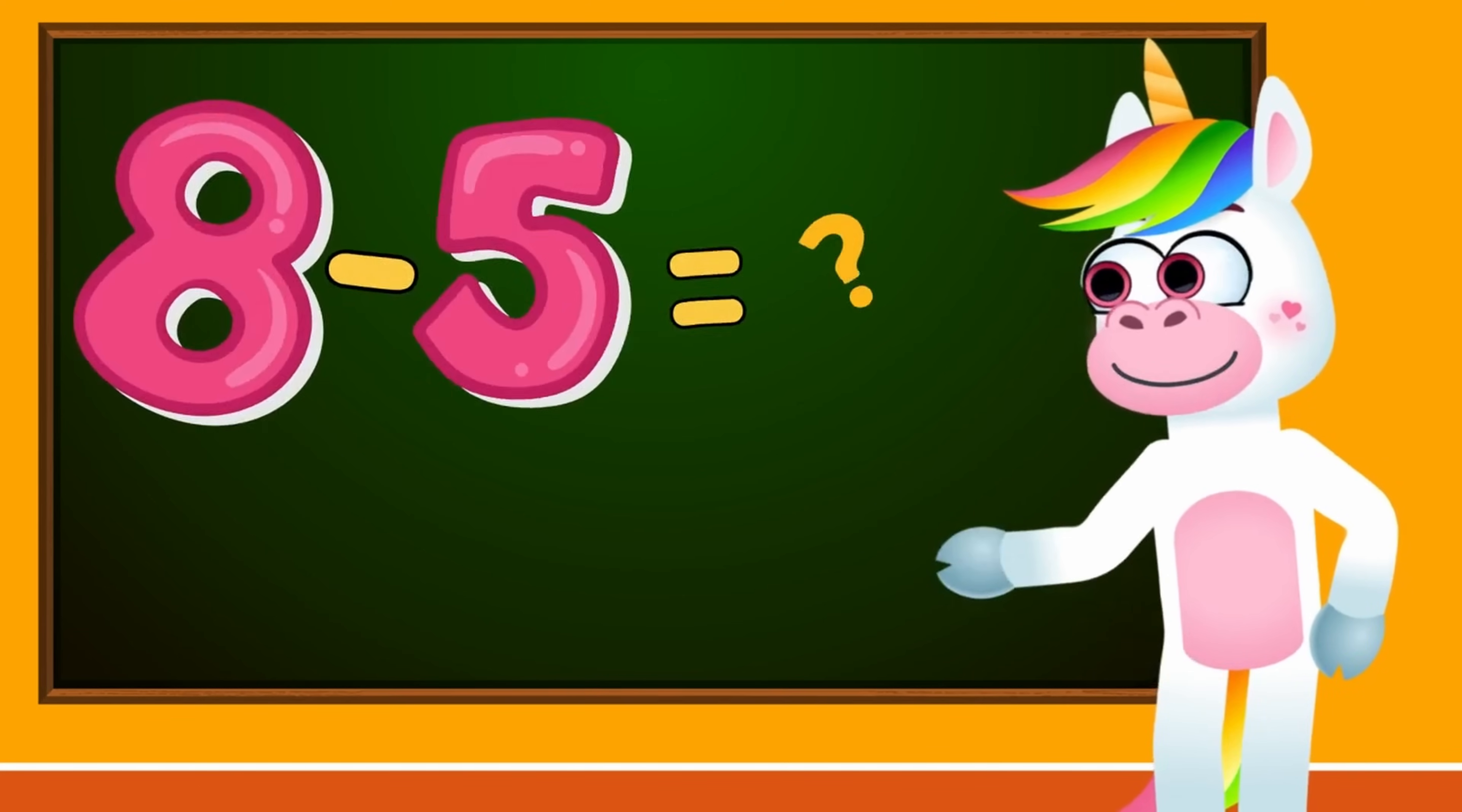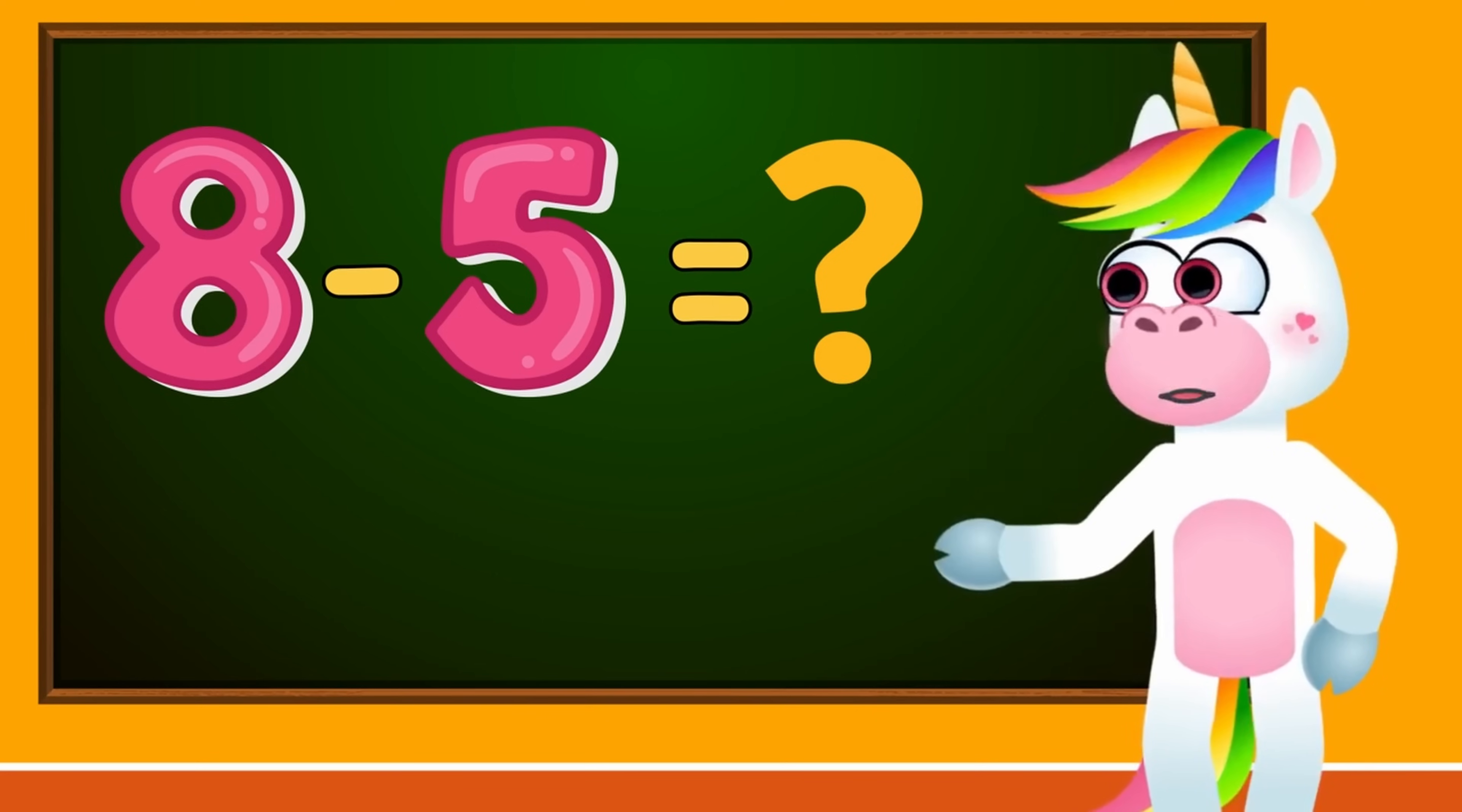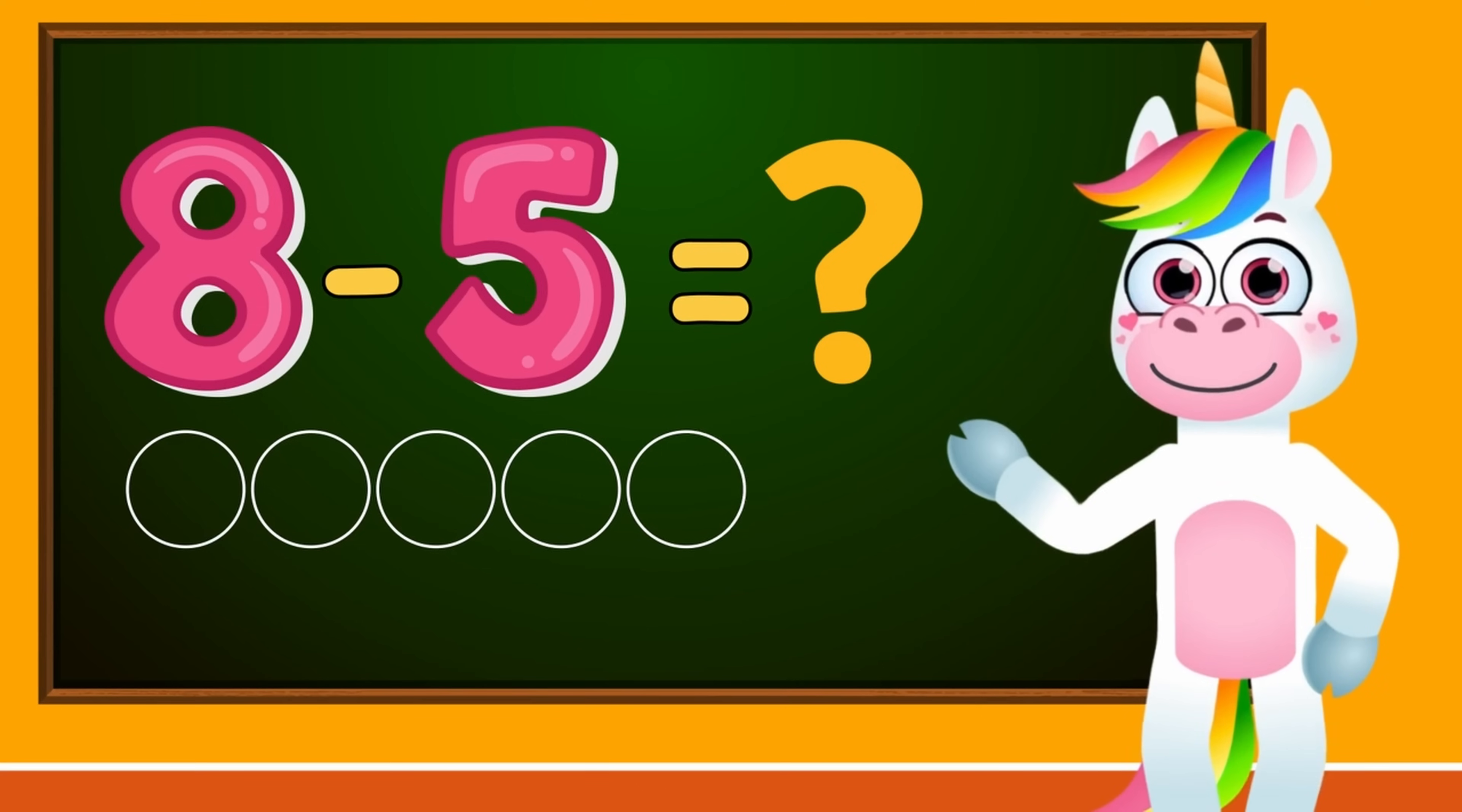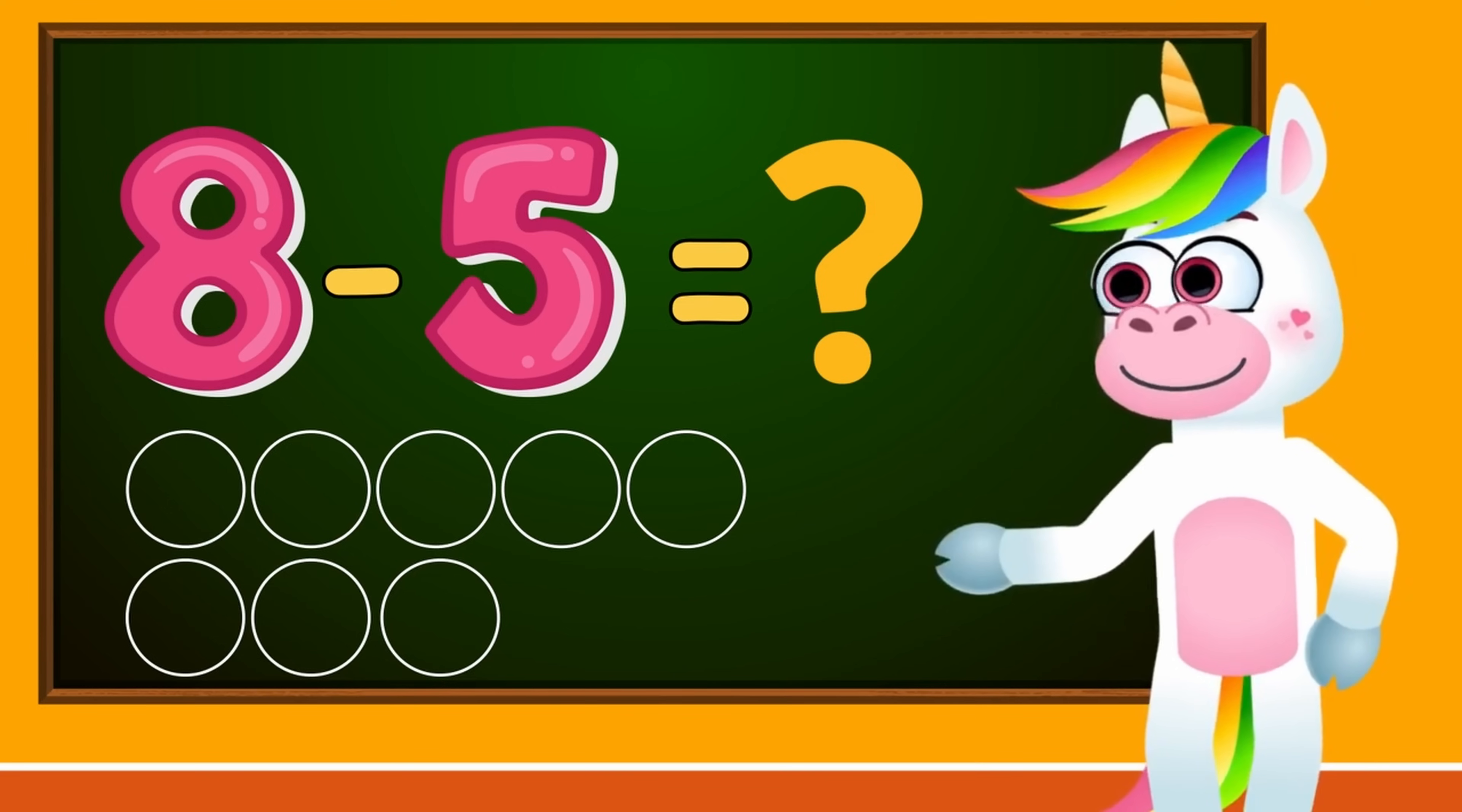Let's look at our next operation, kids. Get your pencils ready. So we have 8 minus 5. What is the correct result? Let's draw 8 circles. 1, 2, 3, 4, 5, 6, 7, 8. Very good. We want to subtract 5, so we'll cross out 5 circles.